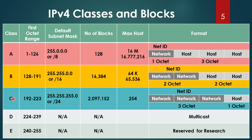In the same way, Class C: the first octet range is from 192 to 223. The default subnet mask is 255.255.255.0, also represented as /24. The number of blocks is 2,097,152, and the maximum hosts per block is 255. You multiply the blocks by the maximum hosts to get the total number of IPs.